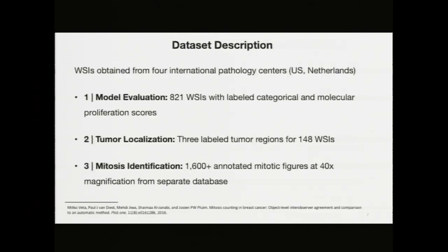The data set I used involved three components. The first, used for model evaluation, consisted of 821 whole slide images with labeled categorical and molecular scores. The second consisted of images for tumor localization, with relabeled tumor regions for 148 whole slide images that helped my model identify which regions were tumors. Finally, my third data set was used for mitosis identification, consisting of 1,600-plus annotated mitotic figures at the 40x magnification level, efficiently used to identify mitoses, which are predictive of tumor growth and spread.